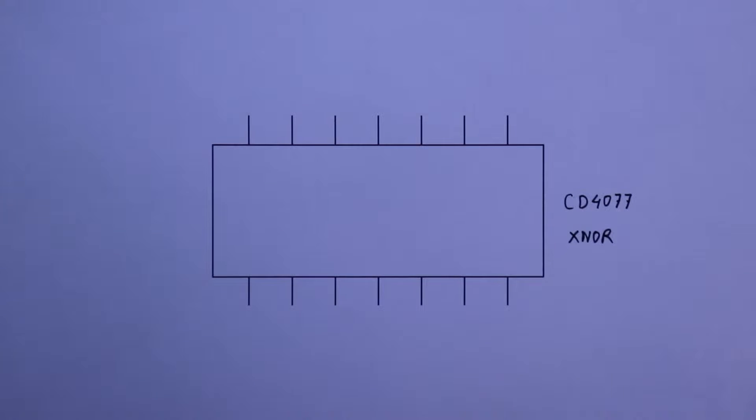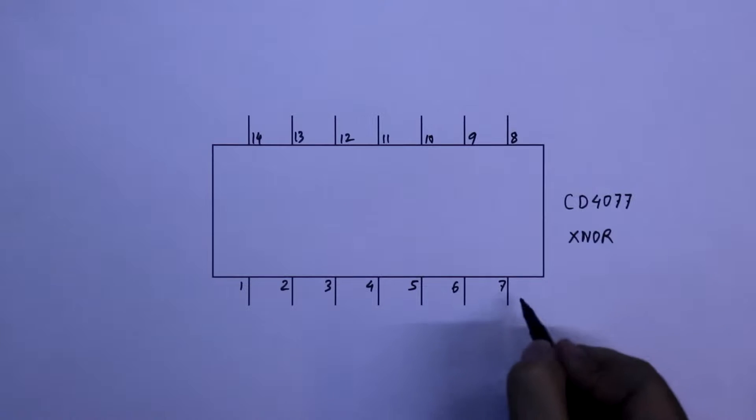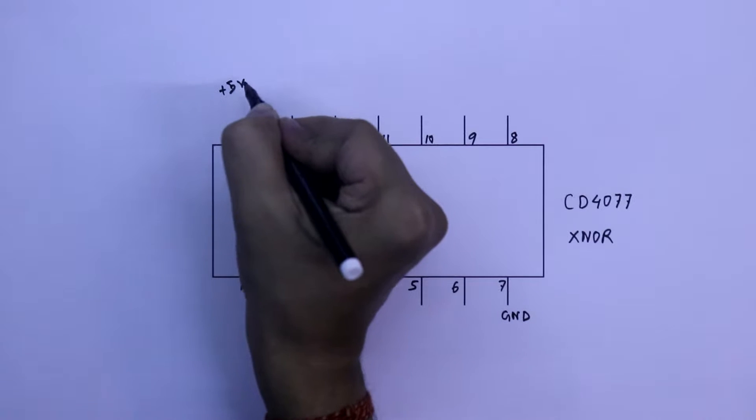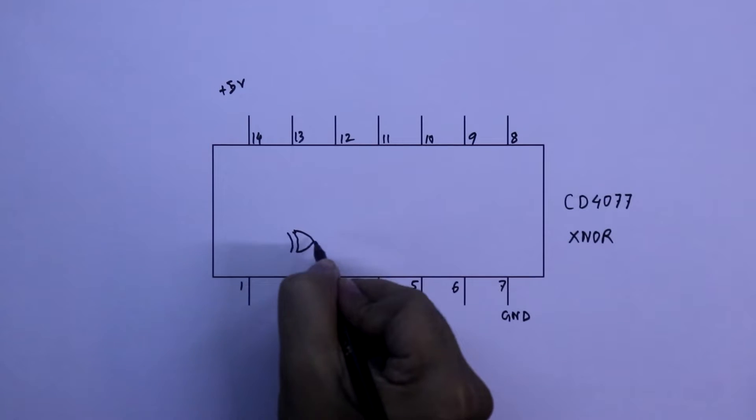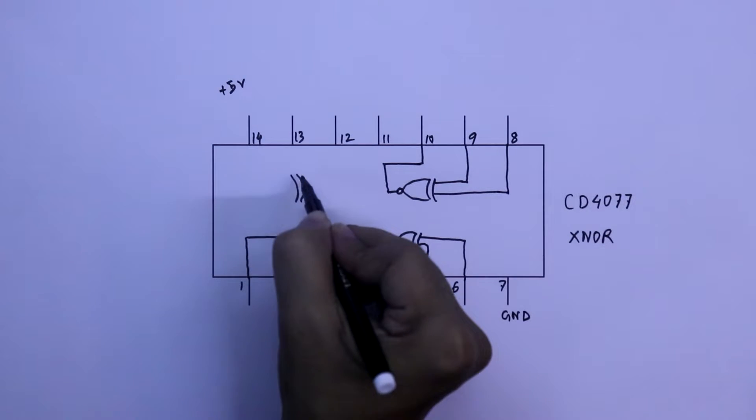Now we will see the pin diagram of this IC. It has 14 pins. Pin number 7 is ground, and pin number 14 is VCC. I will apply plus 5V. This IC has 4 XNOR gates. This is the gate 1, gate 2, gate 3 and gate 4.